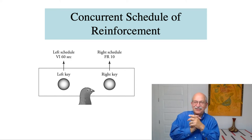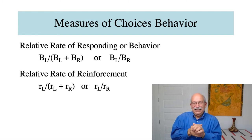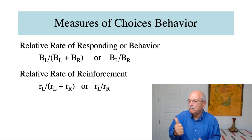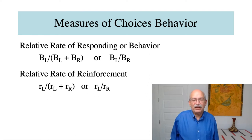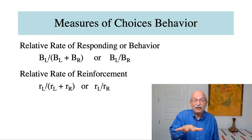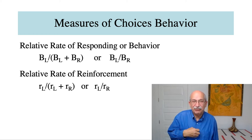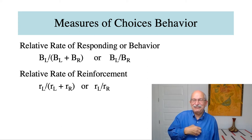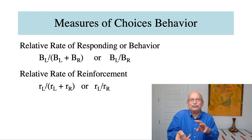What are the rules that govern behavior on a concurrent schedule? We have to decide how to measure choice. In these laboratory experiments, choice is measured in terms of the relative rate of responding on a particular alternative — left or right — and the equation shows you how relative rate of responding can be calculated. Another important variable is the relative rate of reinforcement for a particular behavior, with equations shown below. The little r indicates reinforcement and the capital B indicates behavior. Psychologists have studied how relative rates of responding are related to relative rates of reinforcement.